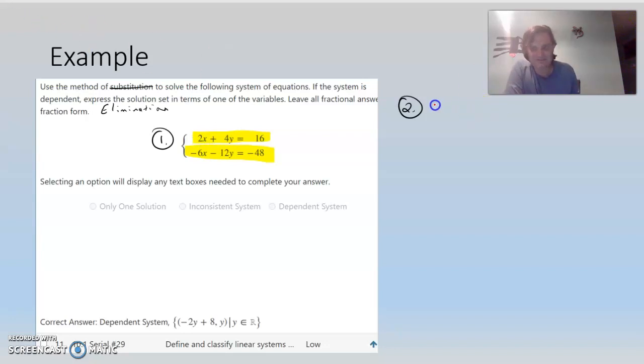I'll take the top one, use an elimination, I'm going to multiply 3 times the equation 2X plus 4Y equals 16. And when I distribute there, I will have 6X plus 12Y equals 48.